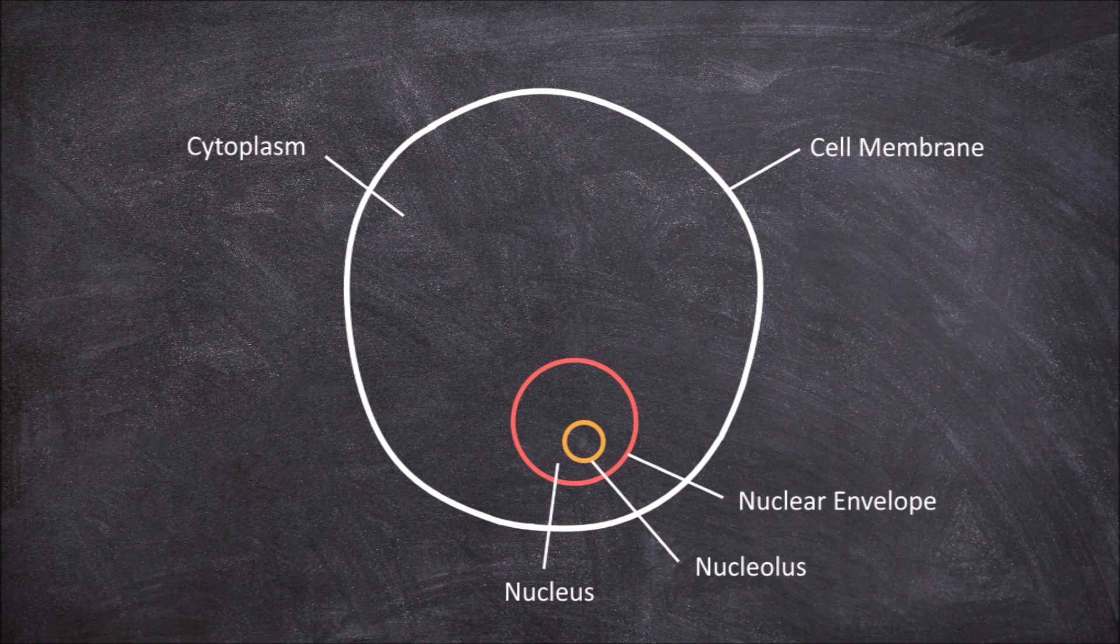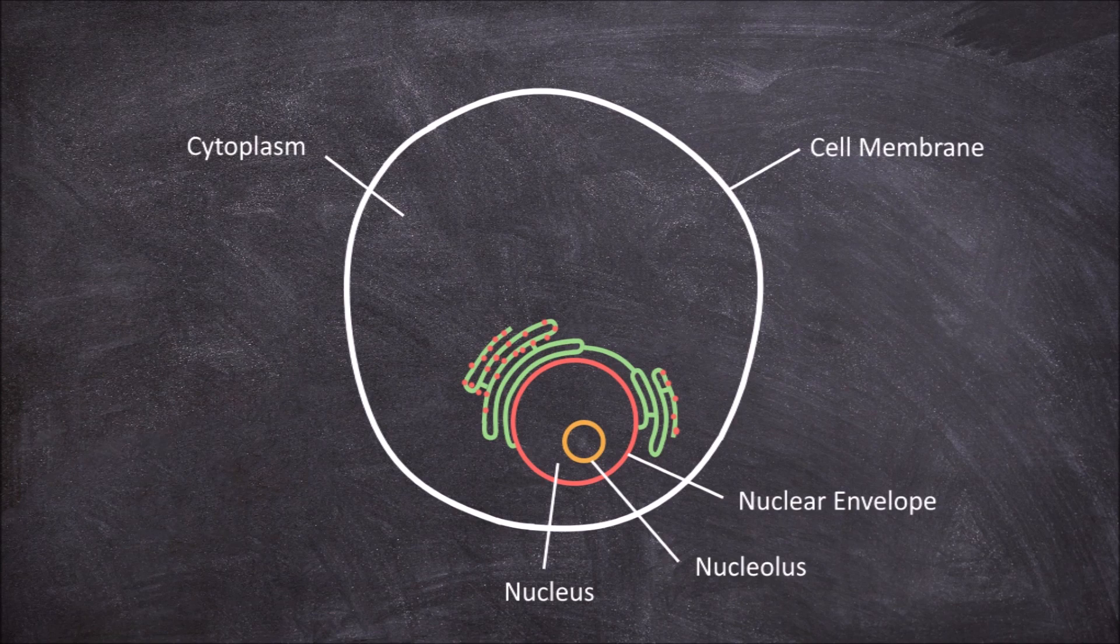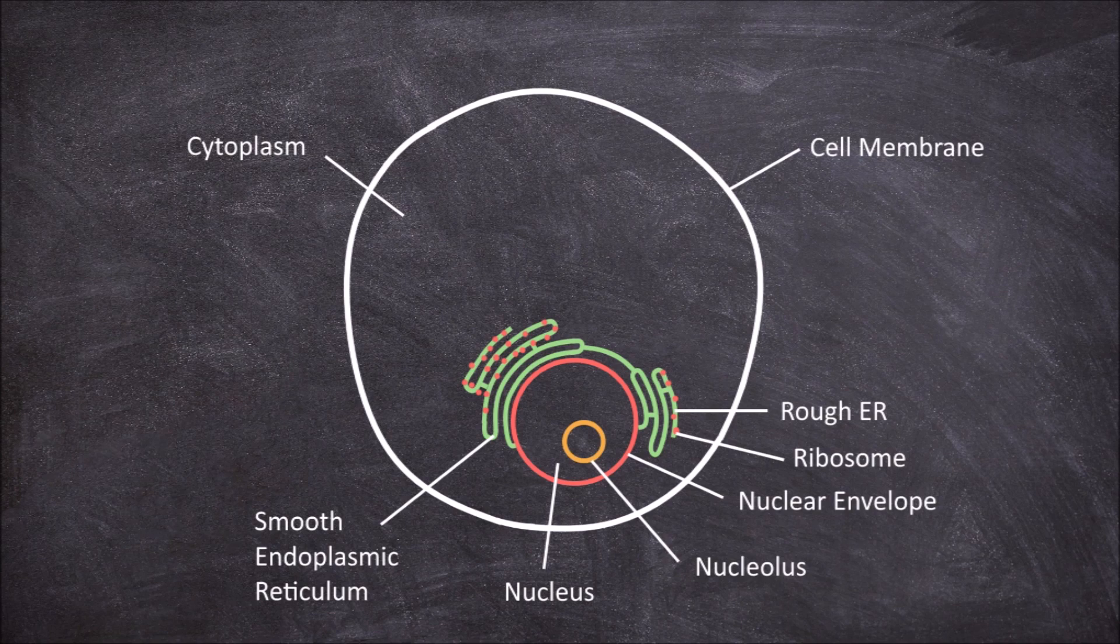The next organelle is the endoplasmic reticulum or ER for short. The ER is made up of a network of tube-like structures. The ER can either have no ribosomes attached, which is called the smooth ER, or it can have ribosomes attached, which is called the rough ER. The ER is involved in the process of the synthesis of lipids and proteins in the cell.